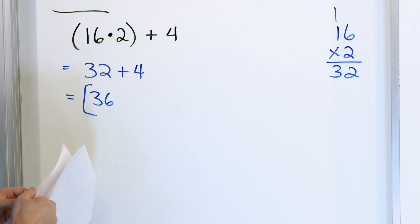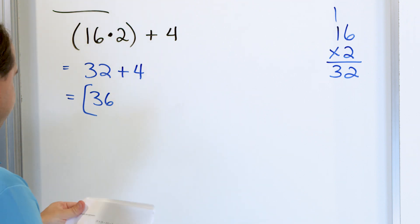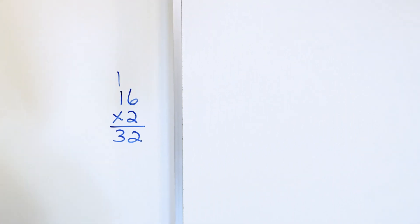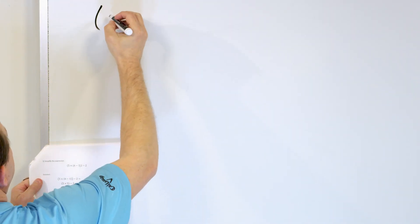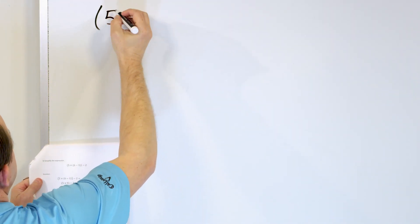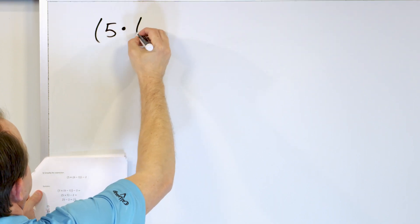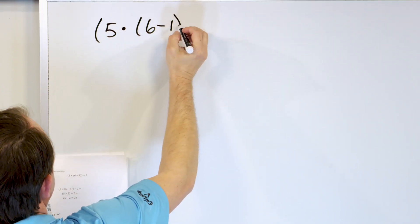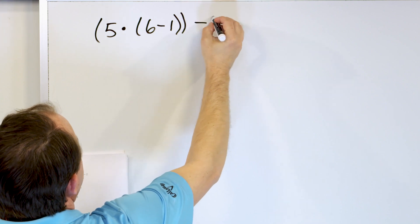You see the numbers are getting slightly bigger, but that doesn't change anything about what we're doing. Now let's crank up the complexity just a little bit by taking a look at 5 times, open parentheses, 6 minus 1, close parentheses, minus 2.